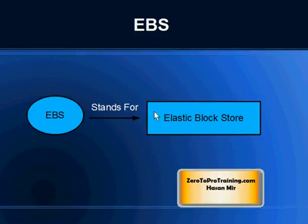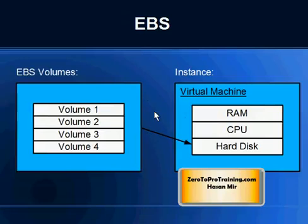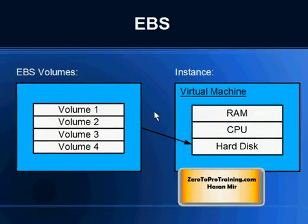We need to understand the concept of EBS, which stands for Elastic Block Store. EBS is a storage that is independent of the instance and is measured in volumes. When you create an instance, a certain number of volumes are automatically created for you. You can also manually create EBS volumes and attach them to an existing instance as devices.